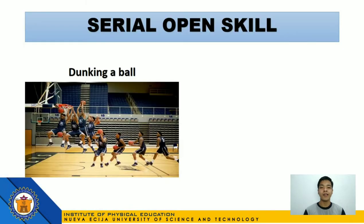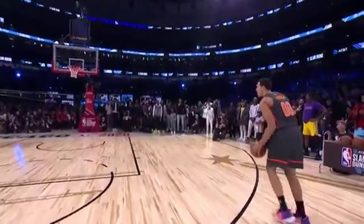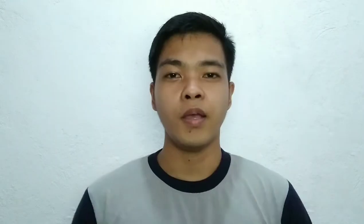And lastly, let's proceed to the examples of serial skill. First, we have dunking a ball as an example of a serial open skill. Dunking a ball is a serial skill wherein you have to take a series of movements in a specific order to dunk the ball. It became a serial open skill because in a game, there are external factors such as the audience, your opponent, and the kind of court you're playing on — unlike when you're alone in your own court, where you can easily make it.